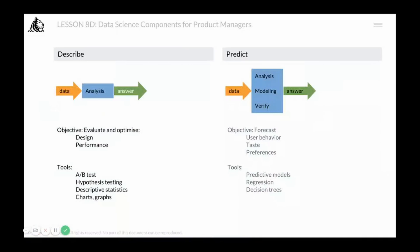In descriptive analytics, you will typically have existing data. The objective is to evaluate and optimize the design or the performance. You will get the data, do the analysis, and get the answer. The descriptive is happening on data that has already happened and you are just trying to describe what has happened.